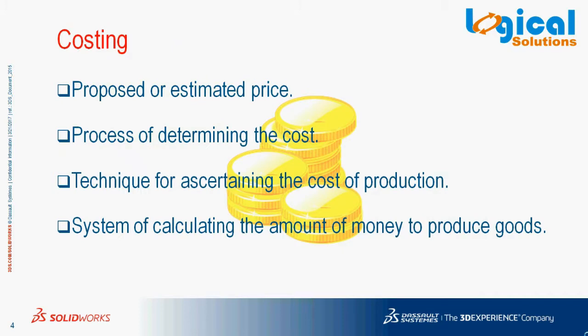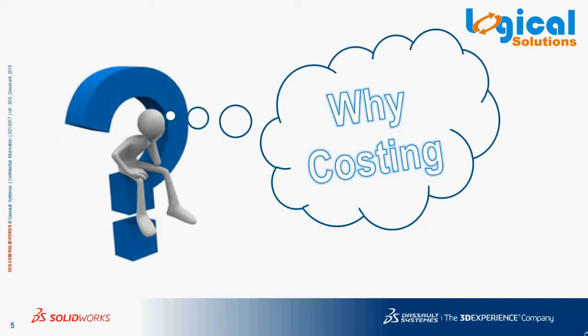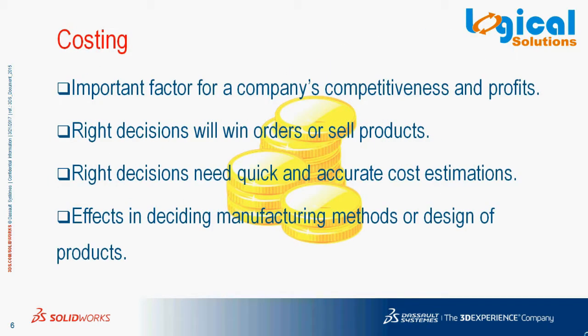So firstly, what is costing? Costing in general has many definitions in the context it is used. But to us, costing can be defined as a proposed or estimated price of a product. Also, a process of determining the cost of a component. This is a technique for evaluating the cost of production or a system of calculating the amount of money required to produce or manufacture parts.